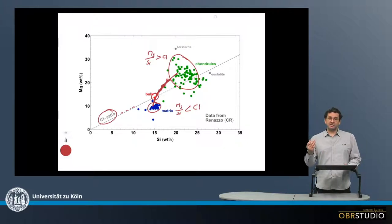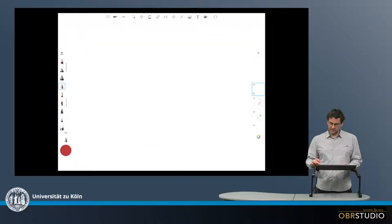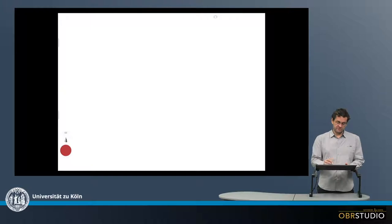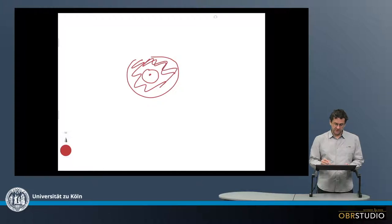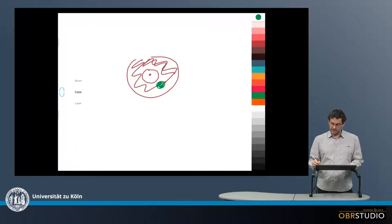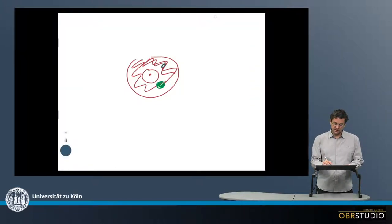Now behind complementarity is a certain question, and this is quite important in this context here. The question is whether chondrules and matrix... If this is a protoplanetary disk and this is the Sun, now this is the disk around the Sun. The important question is whether chondrules form here in one reservoir with a certain magnesium-silicon ratio, and matrix forms here in another reservoir with a certain magnesium-silicon ratio, and then both are mixed together.